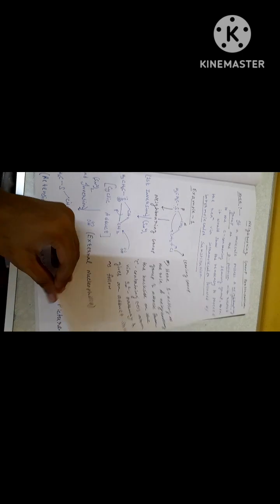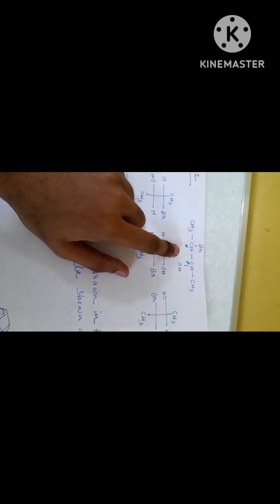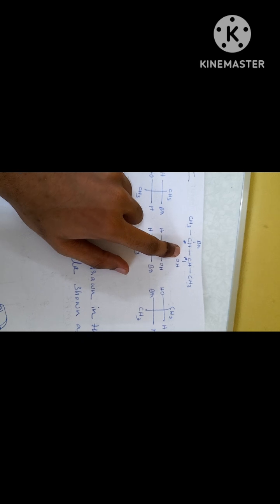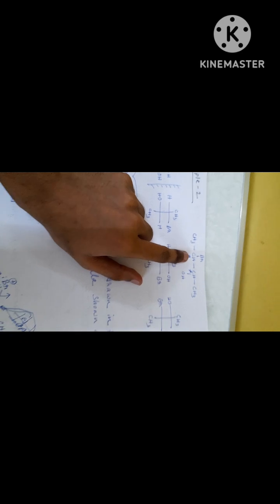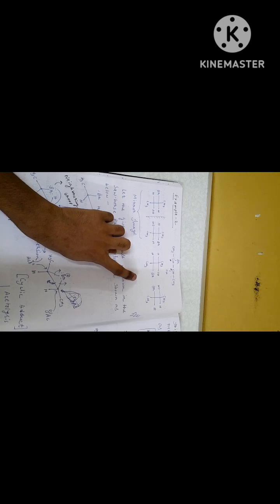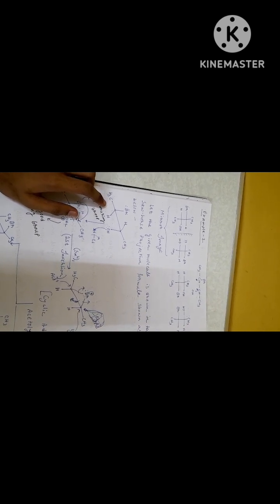Another example is 2-bromo-3-hydroxybutane. Since the molecule contains two different chiral centers, there are four different stereoisomers — two are mirror images of each other and two are meso compounds. I have written the given molecule in the sawhorse projection formula in order to understand the mechanism clearly.